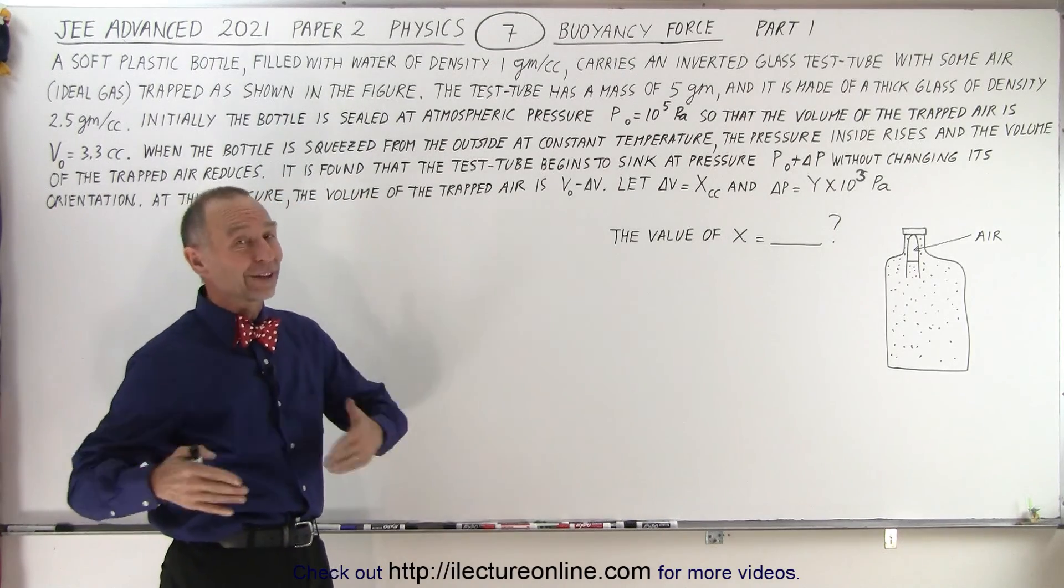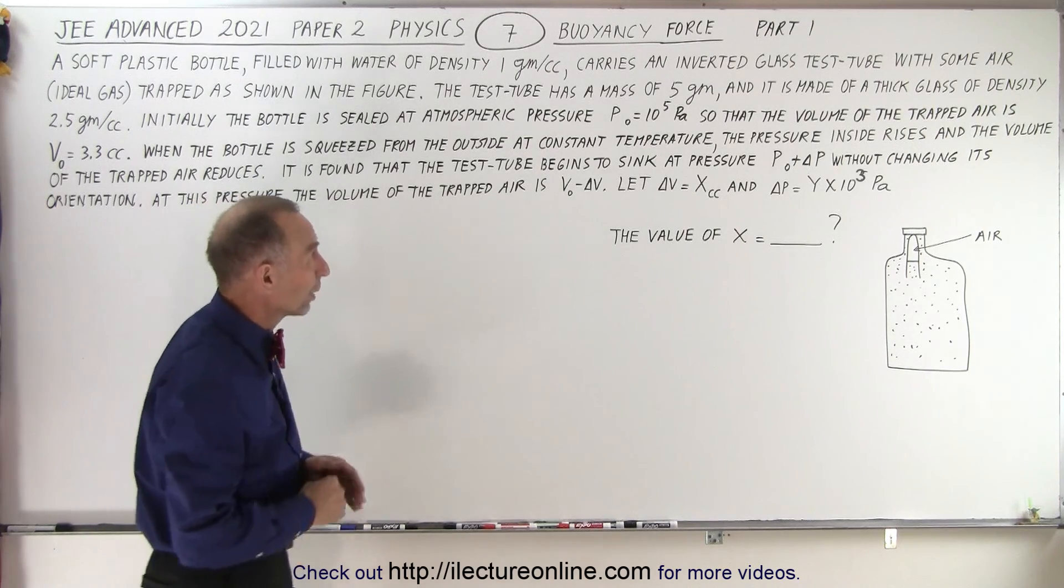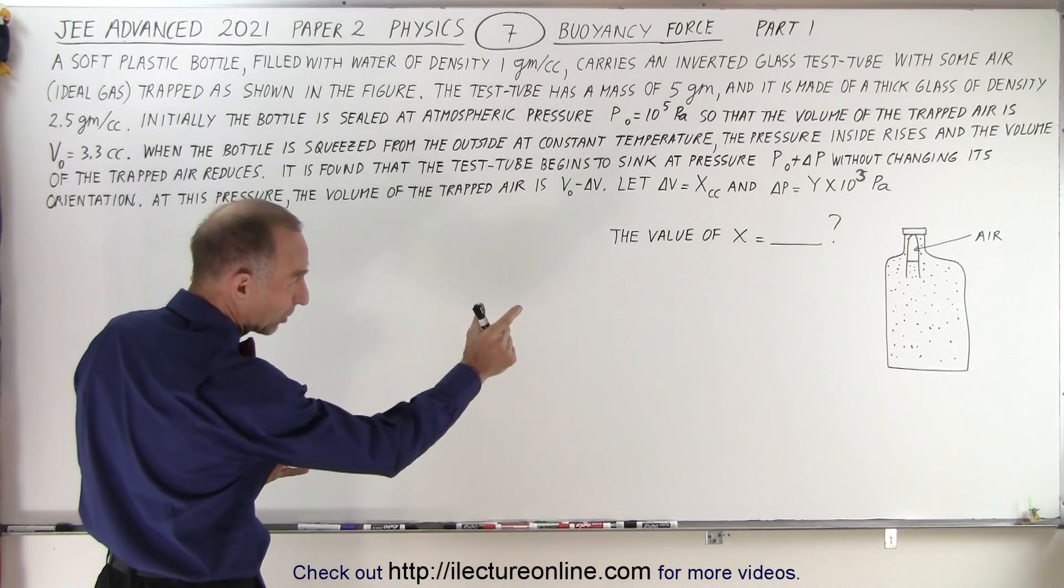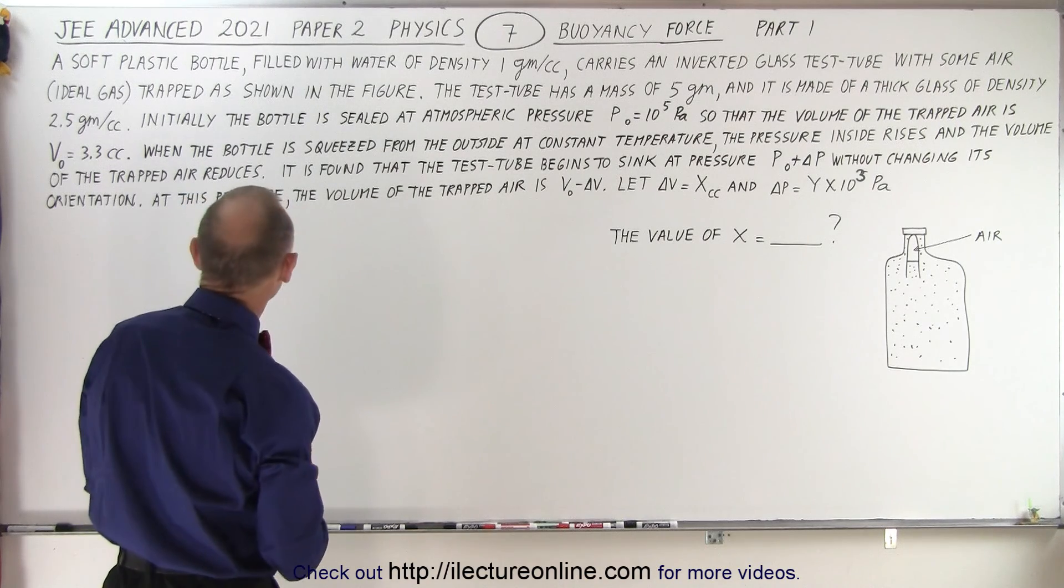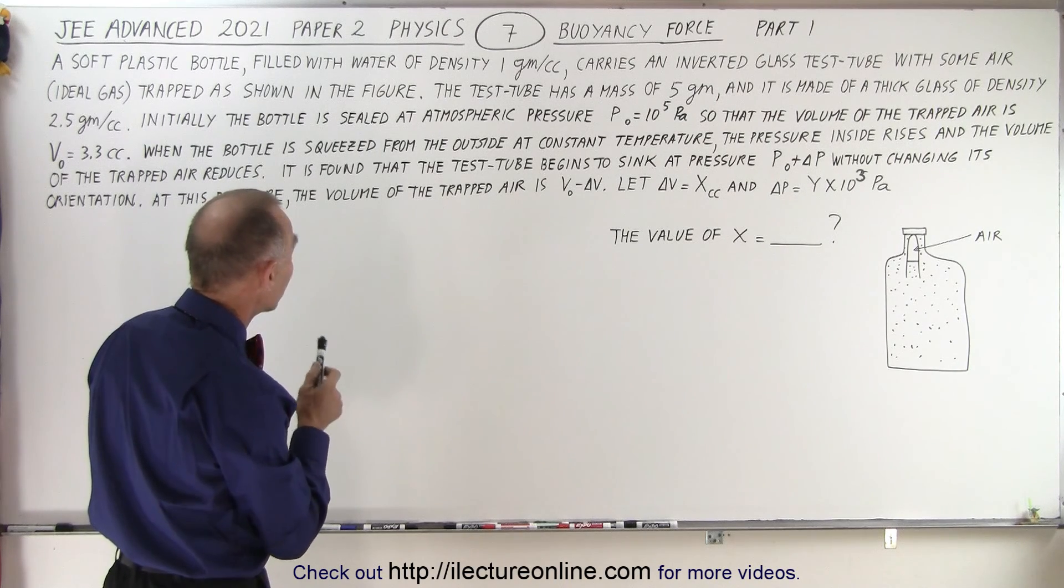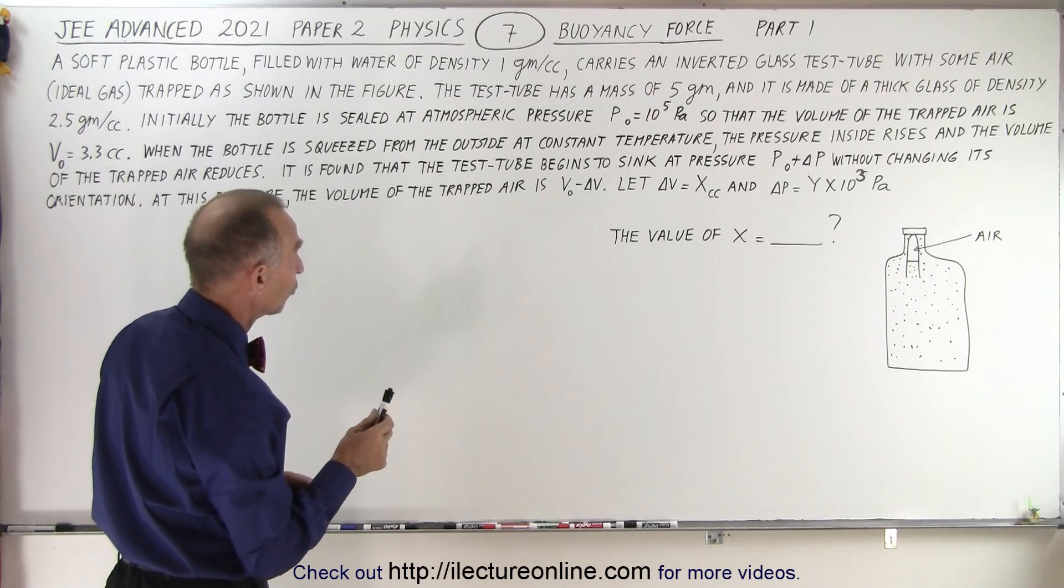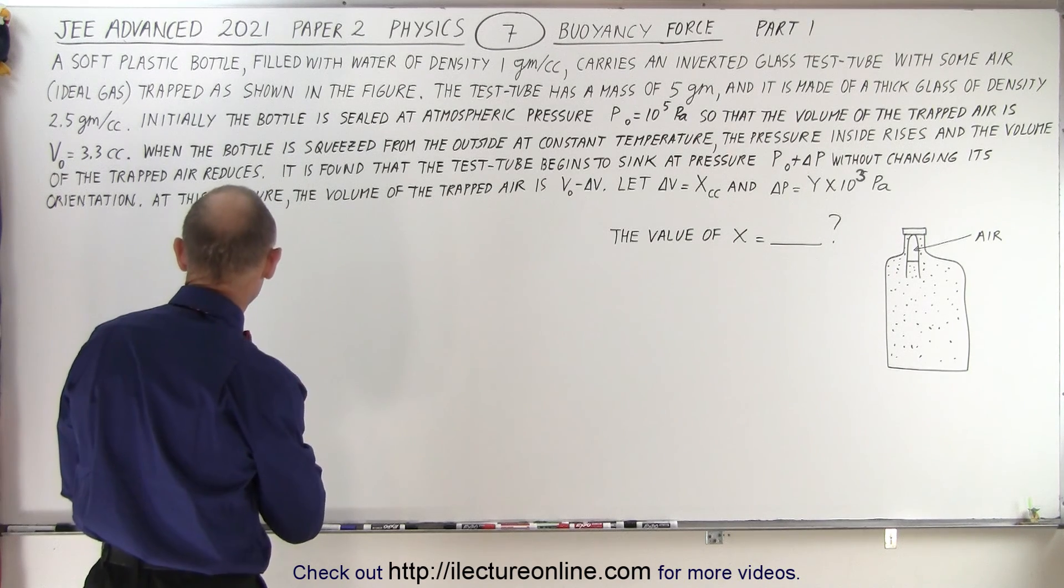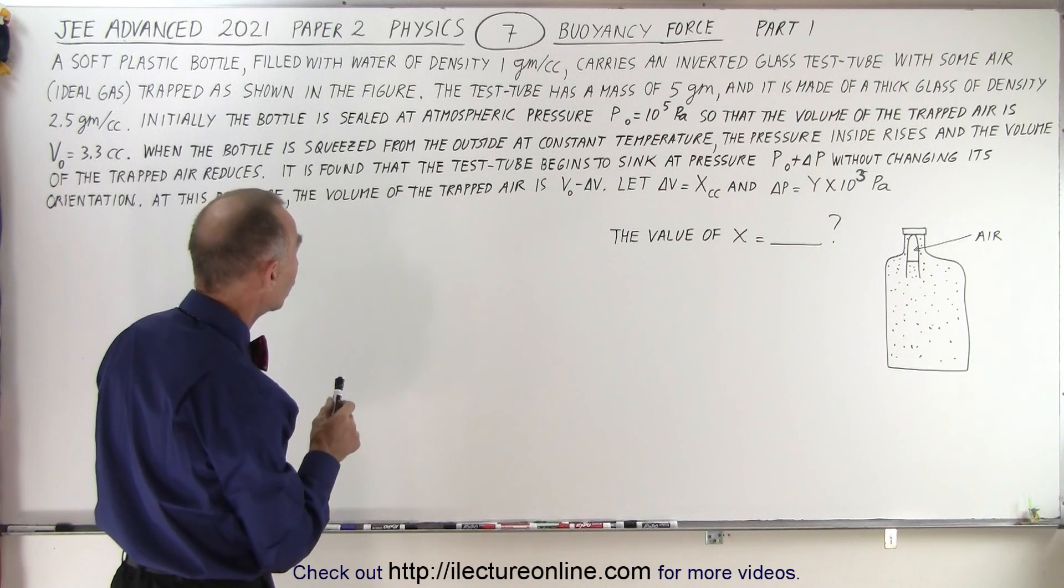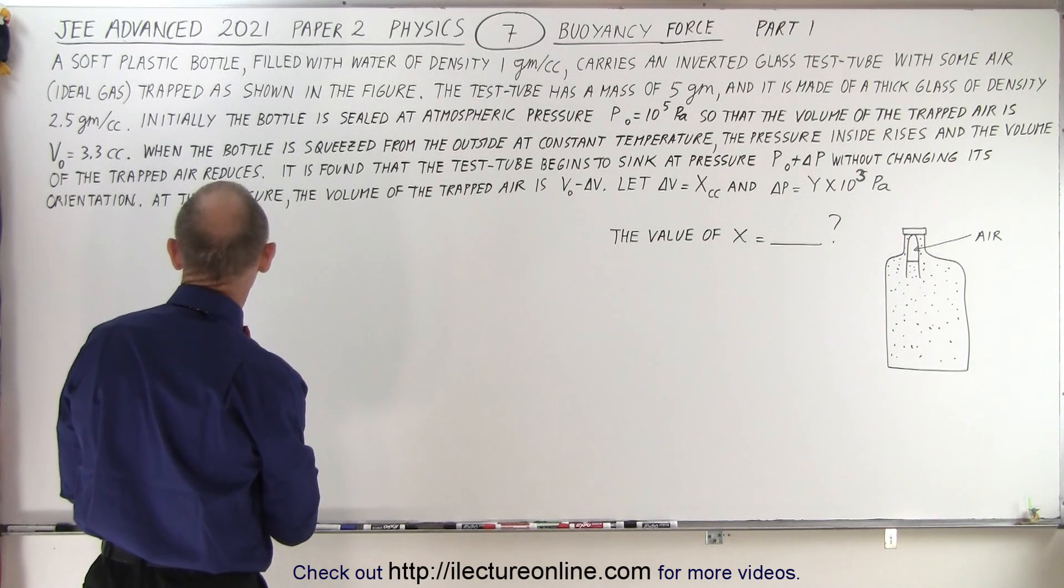But the problem is very long, so let's read the problem and probably half the time goes into just trying to figure out what they're asking for. It does deal with buoyancy force. We have a bottle there with something inside of it, and it says here: a soft plastic bottle filled with water of density one gram per cubic centimeter carries an inverted glass test tube with some air made of ideal gas trapped as shown in the figure.